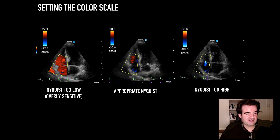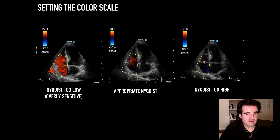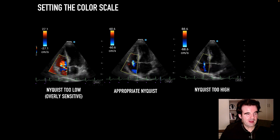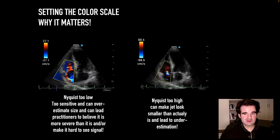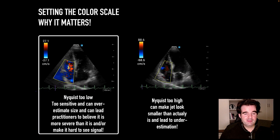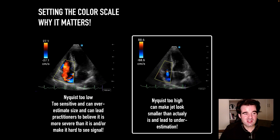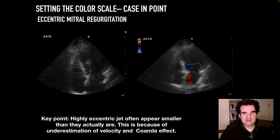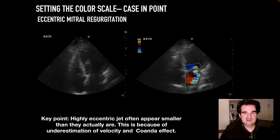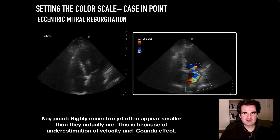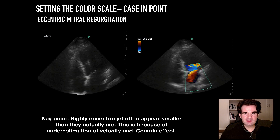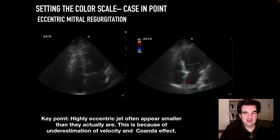Here are three separate examples of different Nyquist limit settings. You can see how setting the Nyquist limit too low can confuse signal and noise, while setting it too high can dampen the signal. It's important to be aware of this color scale whenever using Color Doppler. When the Nyquist is low, the practitioner may falsely conclude that regurgitation or stenosis is more severe than it truly is. When it's too high, it can make the jet appear smaller and lead to underestimation or gross underquantification. In eccentric MR, this becomes even more complicated, as eccentric jets can be underappreciated by Color Doppler — a wall-hugging jet probably looks less impressive than if it were centrally directed.